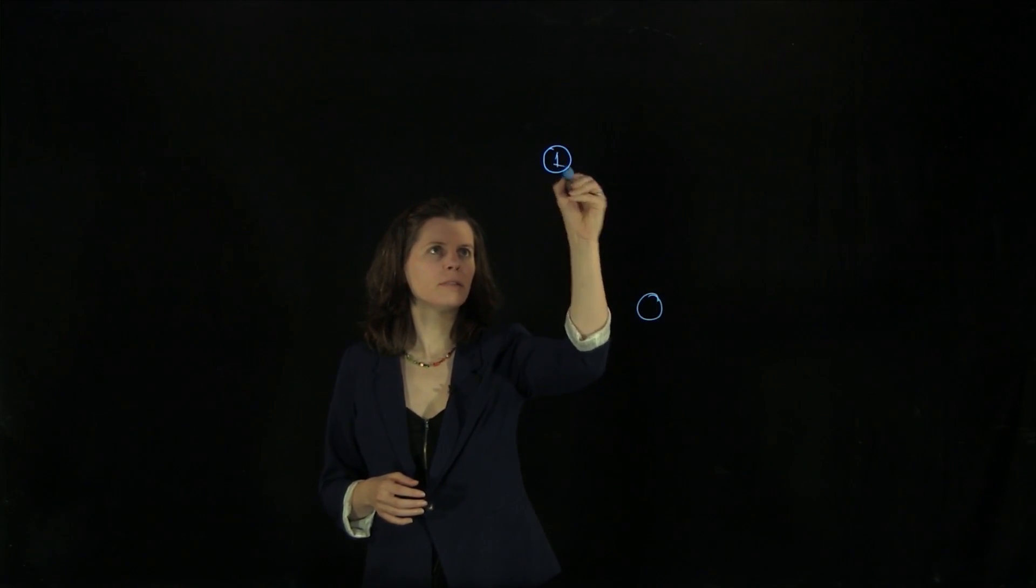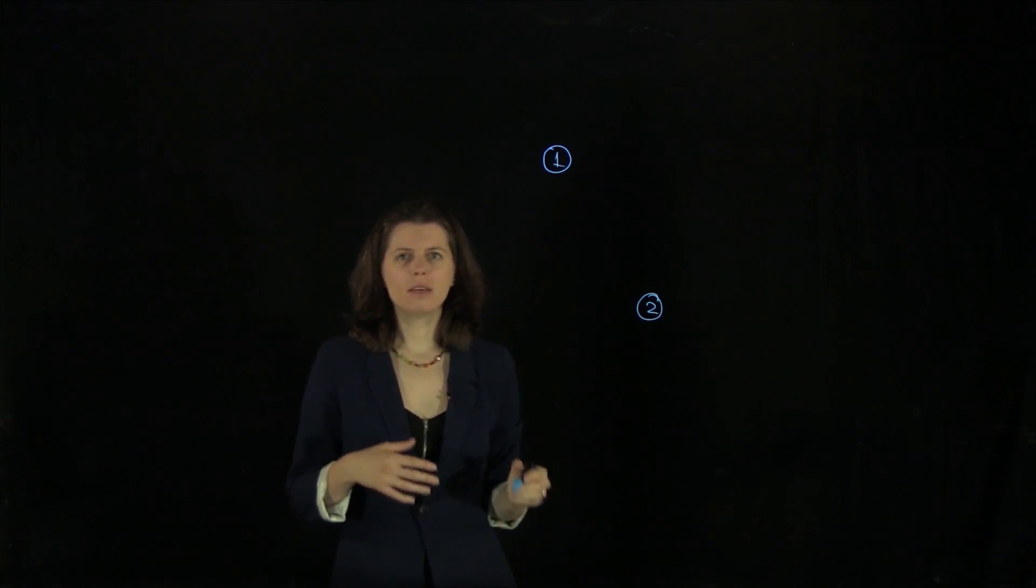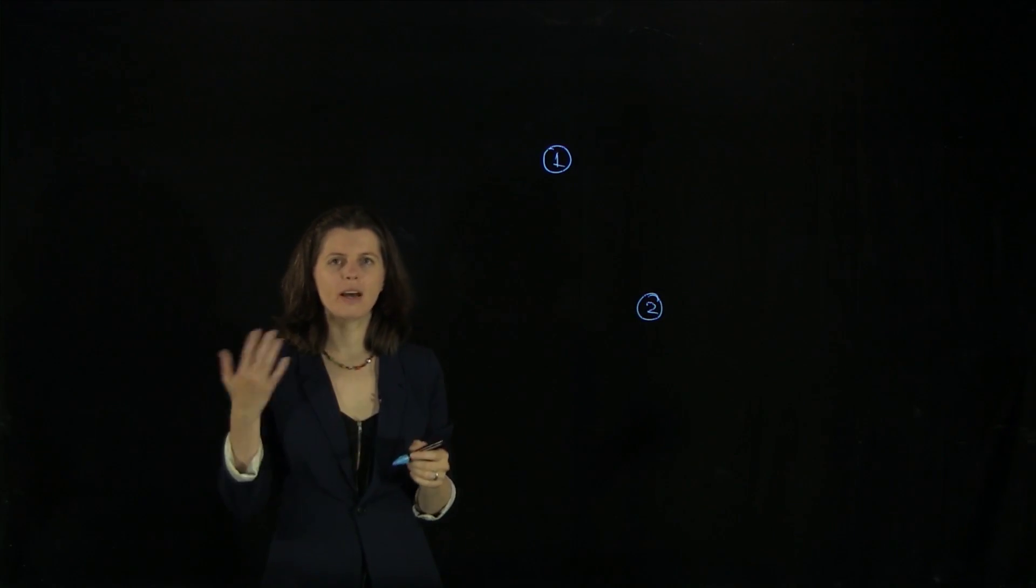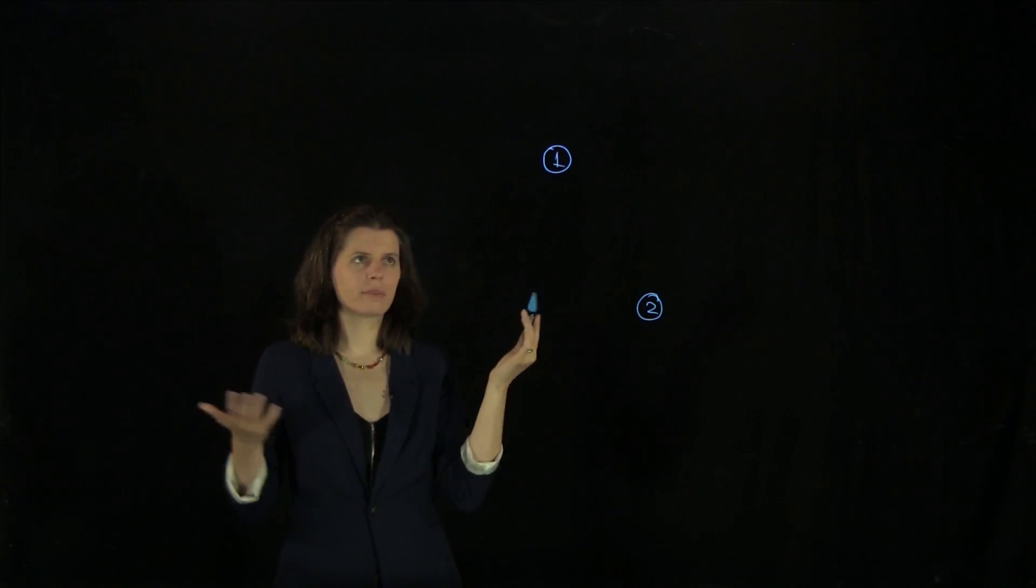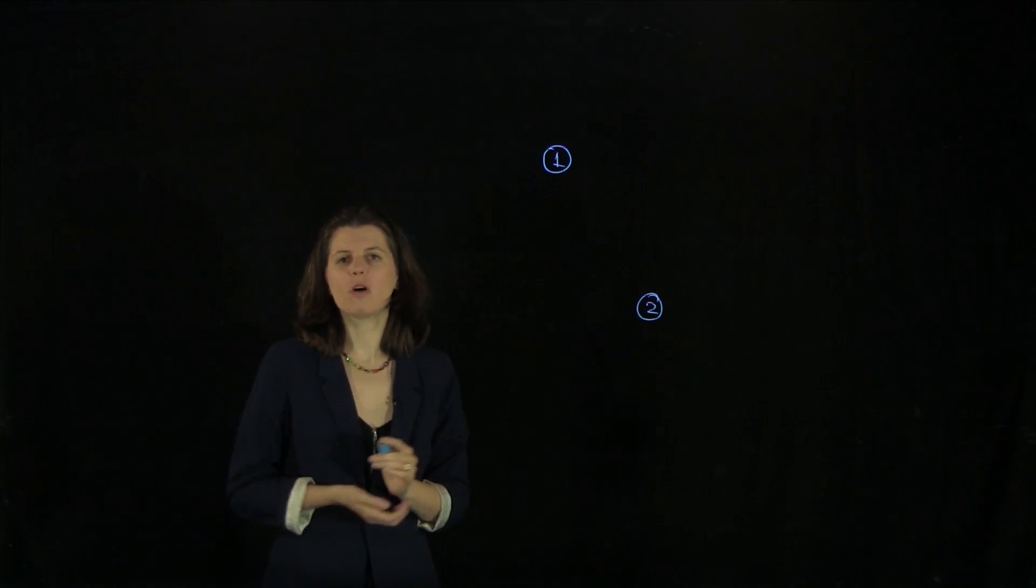We have two objects here, object one and two. That could be two planets or two asteroids or two white dwarfs, black holes, any kind of objects you can imagine. And they are mutually attracted by each other due to gravitation.